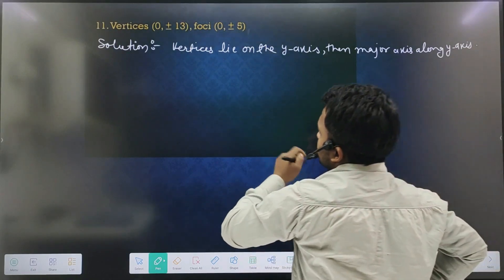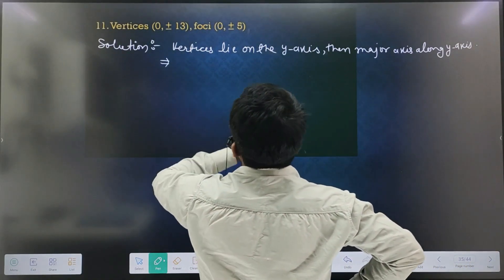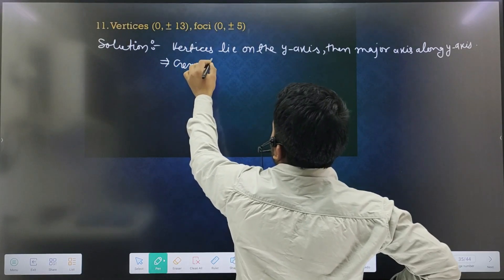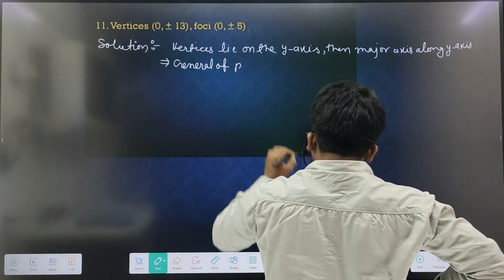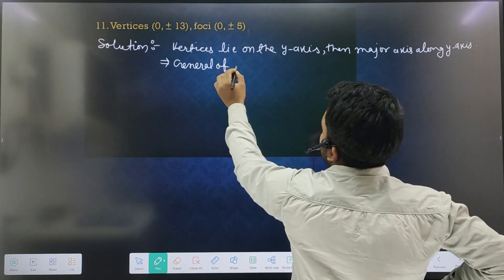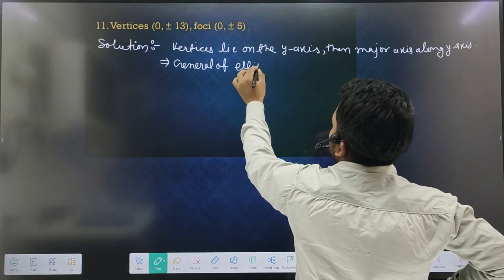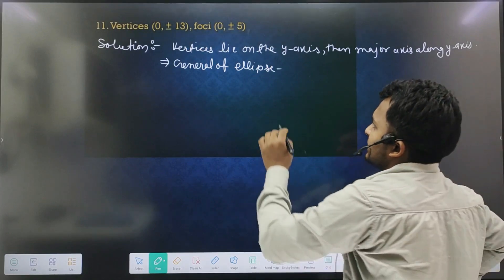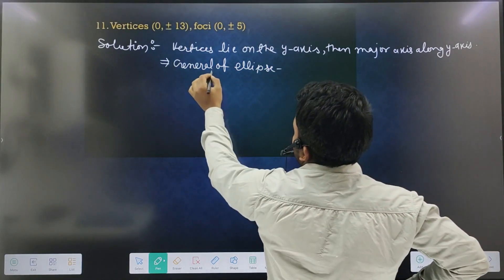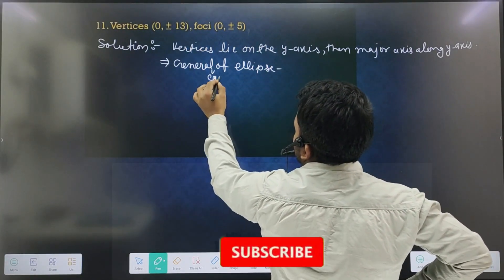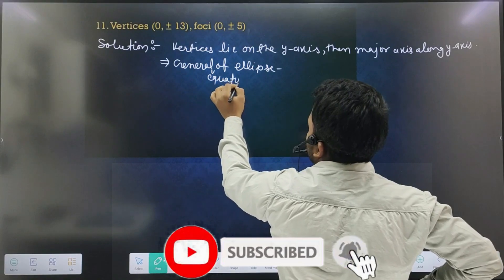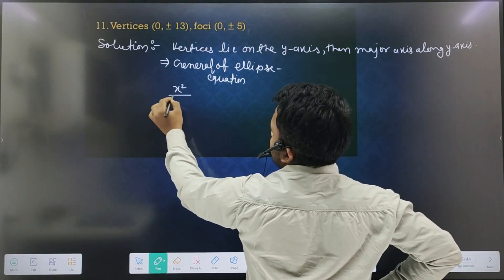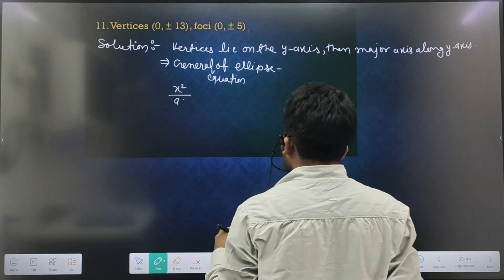Correct, correct. Then here you will see that it will be the general equation of ellipse. What will we do? x square upon...